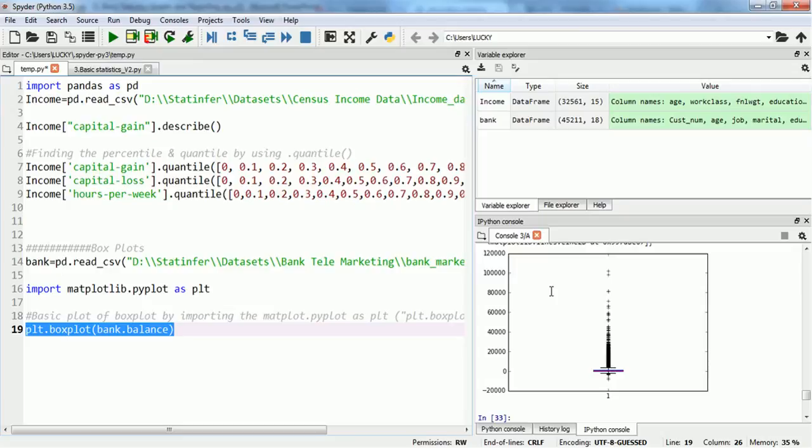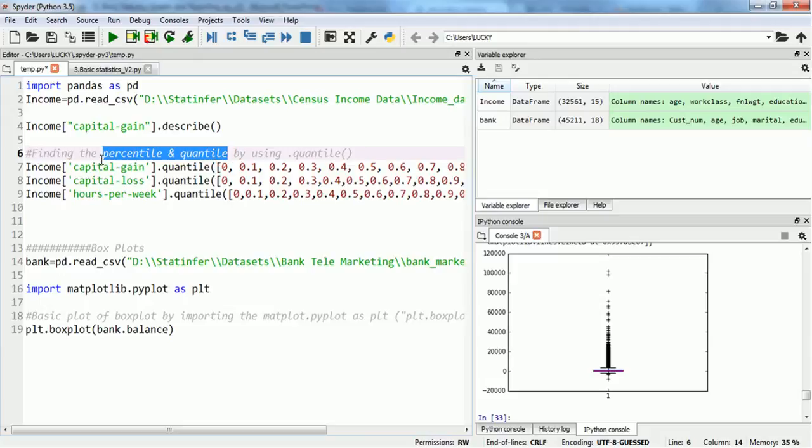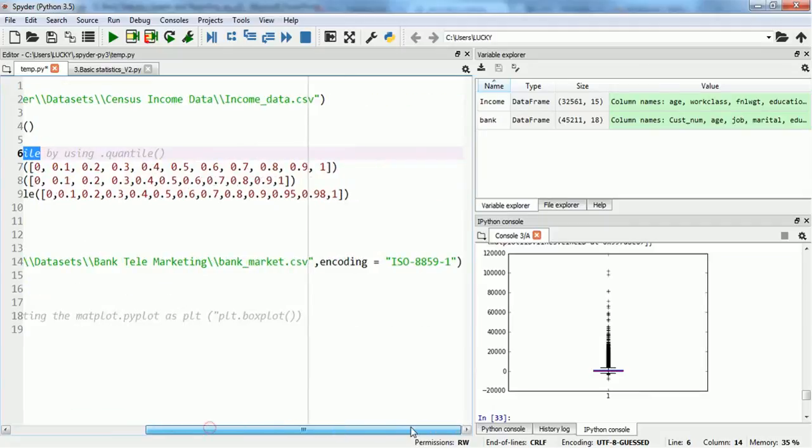And we can again use the percentile and quartile distribution to find out what those values are and we can get another idea where this outlier is lying.